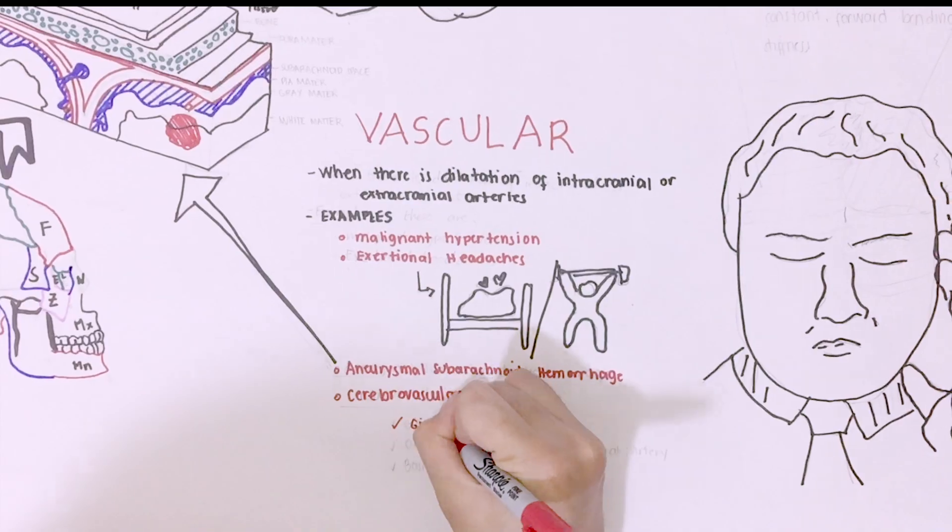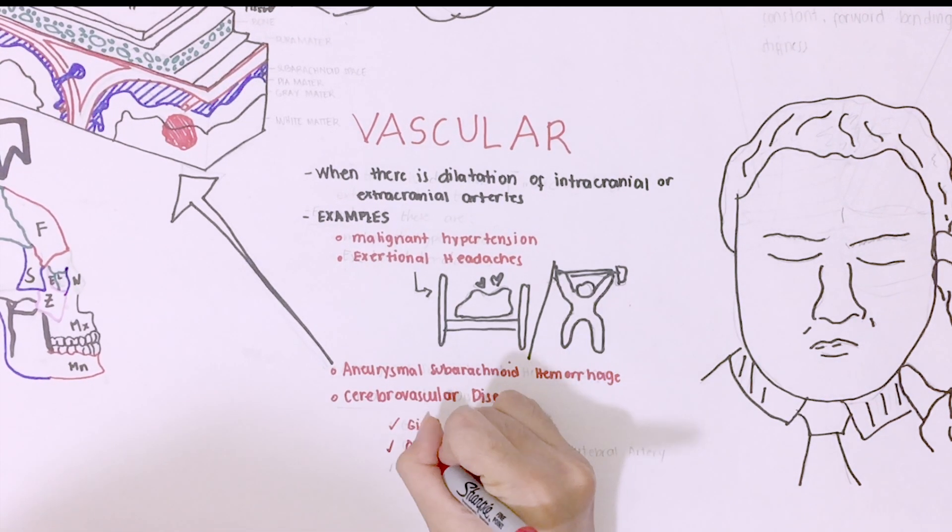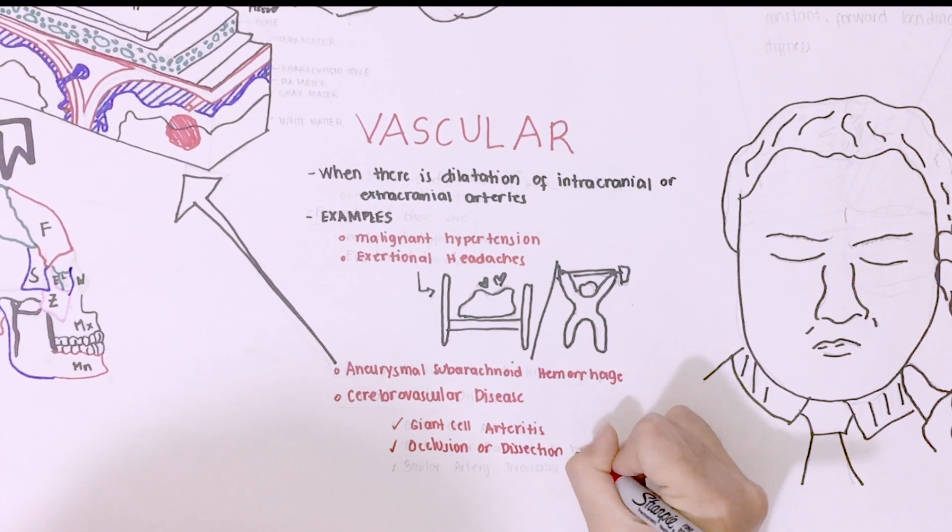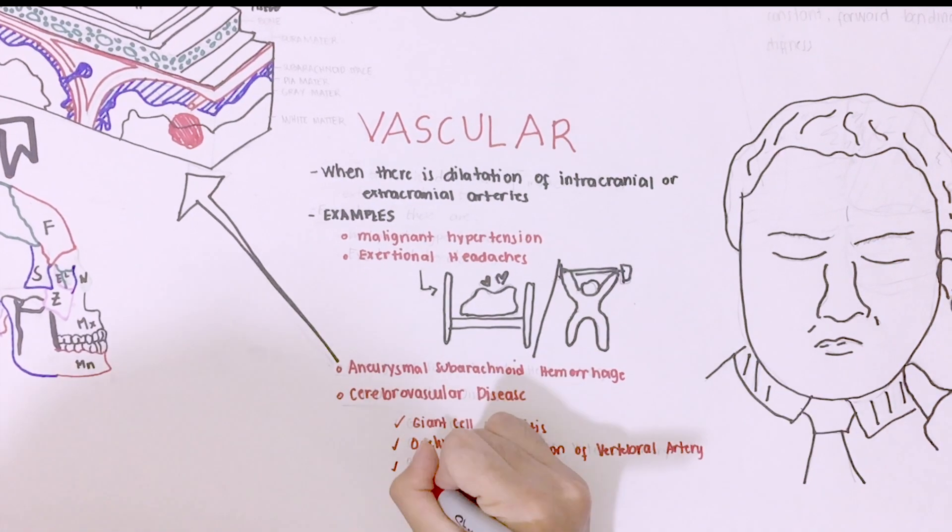In cerebrovascular diseases like giant cell arteritis, that affects extracranial temporal and occipital arteries, they are severe and persistent headaches and localized in the scalp. Occlusion or dissection of vertebral artery that cause pain in the upper neck or posterior auricular area. Basilar artery thrombosis.